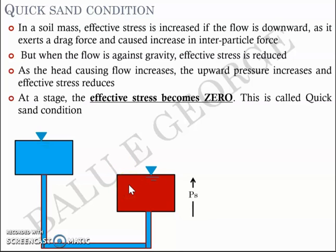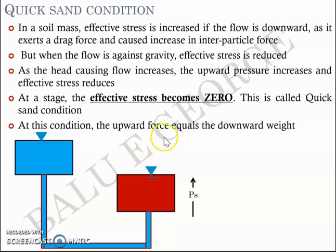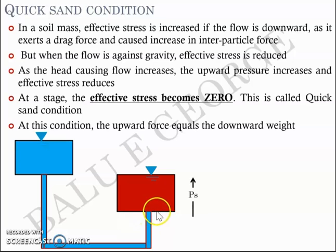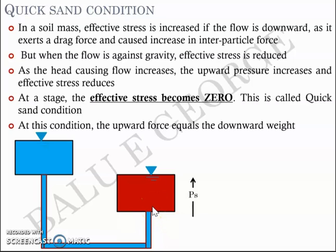At the quicksand condition, the effective stress becomes zero, meaning the soil behaves like a fluid. The upward seepage force equals the downward weight — the seepage pressure equals the stress offered by the soil mass — and they cancel each other out, causing the soil to attain a quicksand condition.